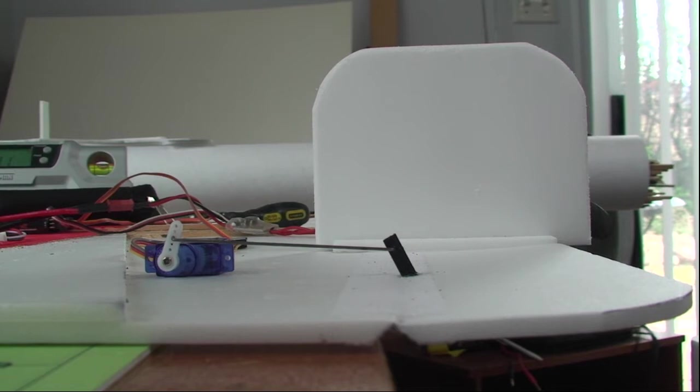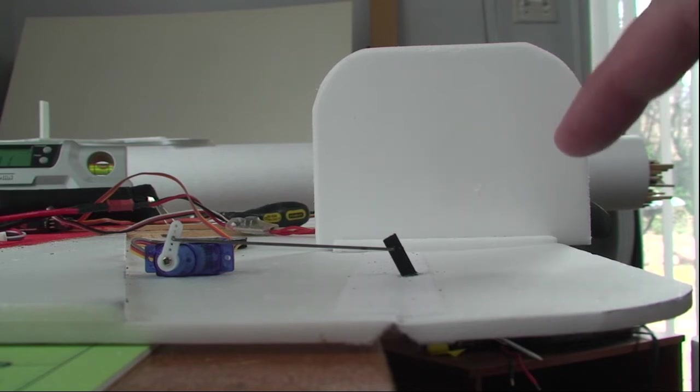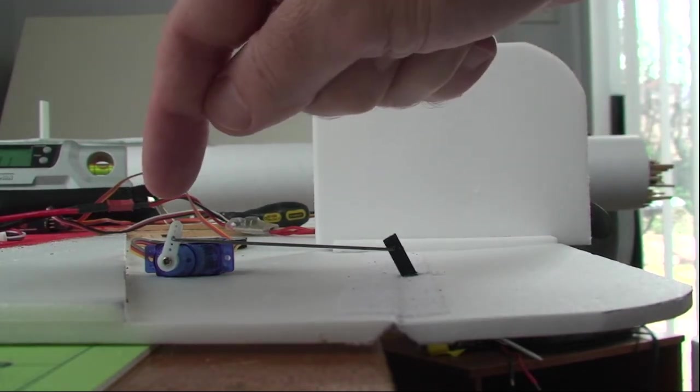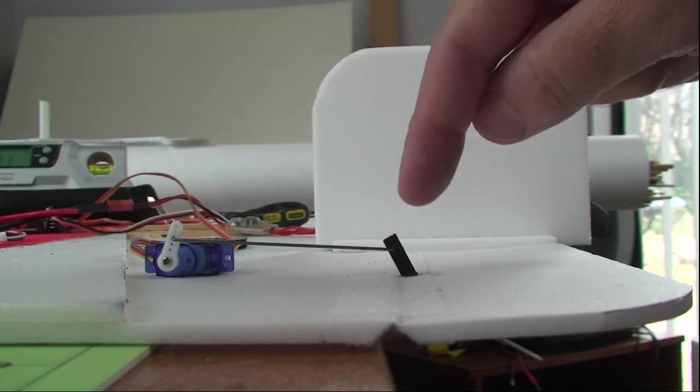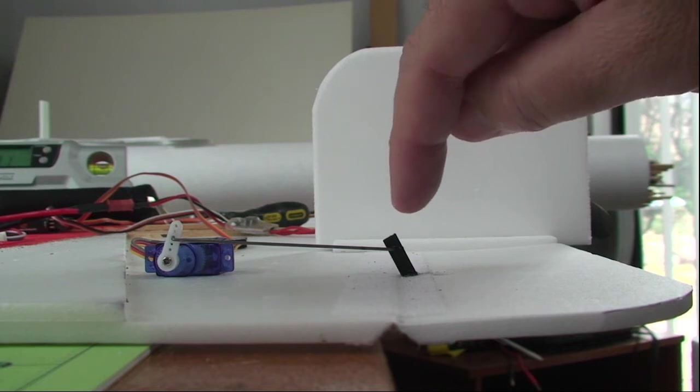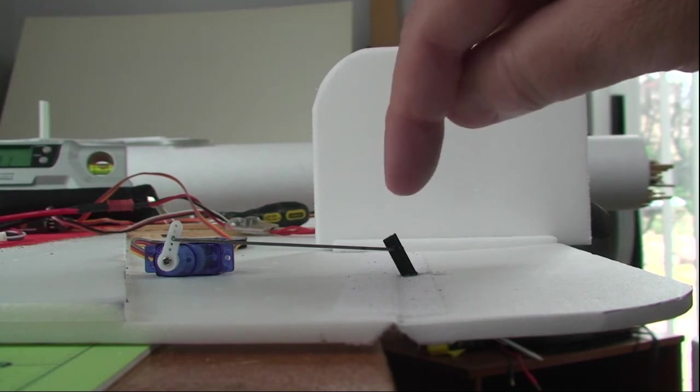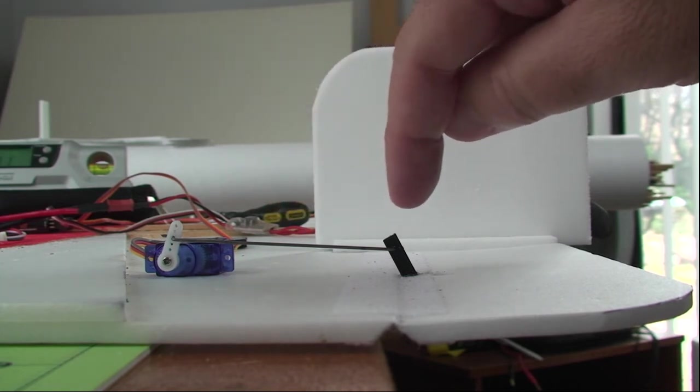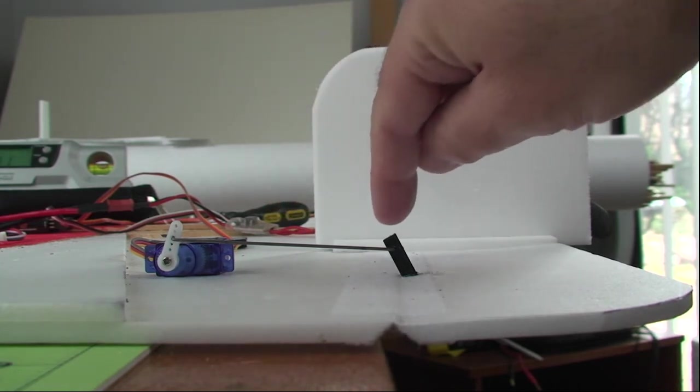What I'm trying to show in this image here is that this is one of the Elevons, this is the control horn, and that's the servo. It's a little bit hard to tell, but the hole in the control horn is just a little bit forward of the hinge line on the Elevon.